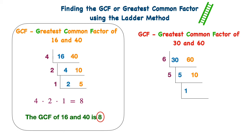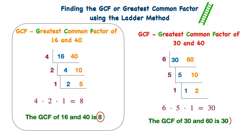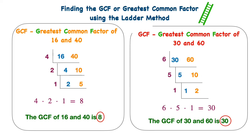I continue down my ladder: 5 times 1 is 5, and 5 times 2 is 10. Now I'm looking at 1 and 2, and the only shared factor between them is 1. Once I reach 1, I'm done. I multiply those shared factors together — 6 times 5 times 1 — and that gives me the greatest common factor of 30. And 30 is equal to 30, and 30 is less than 60, so I know I'm good.